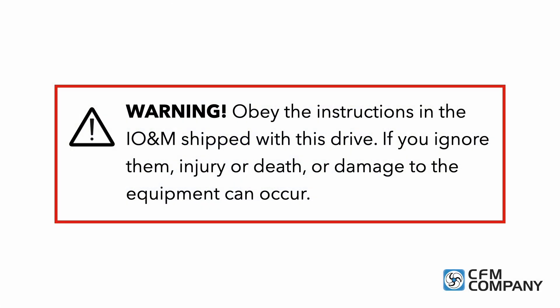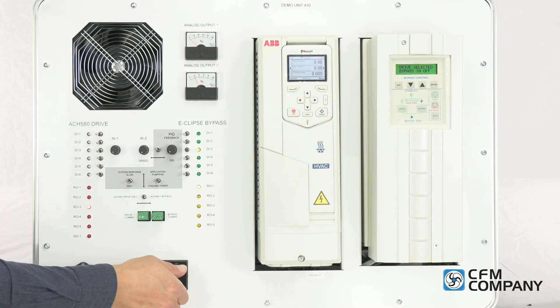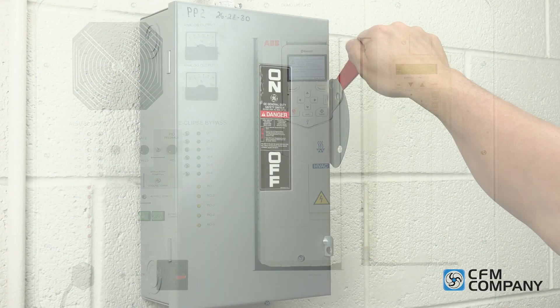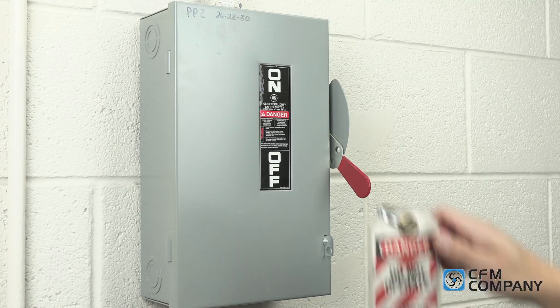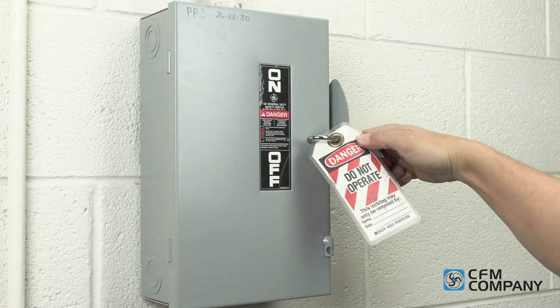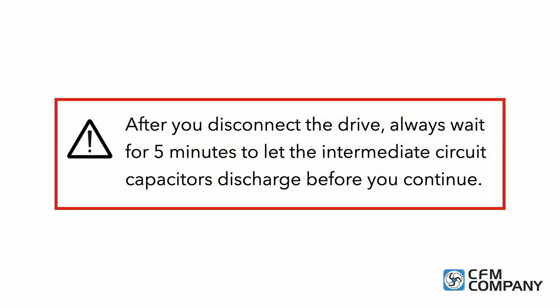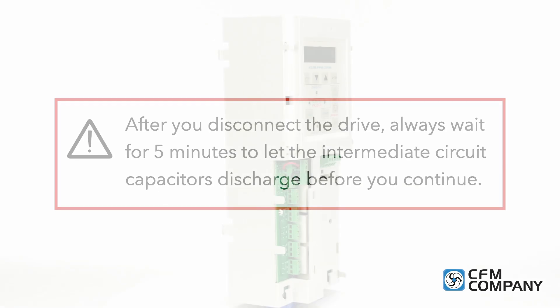Obey the instructions provided in the IONM shipped with this drive. If you ignore them, injury or death or damage to the equipment can occur. Before removing the front cover of the ABB ACH 580, disconnect the power to the drive. Lock out and tag out the circuit disconnect and make sure that reconnection is not possible. Always wait five minutes to let the intermediate circuit capacitors discharge before you continue.